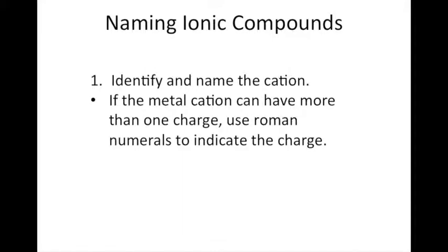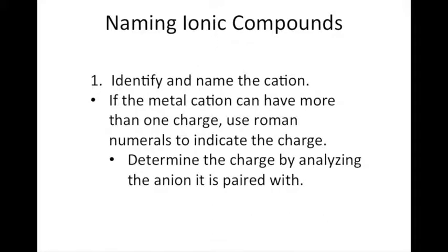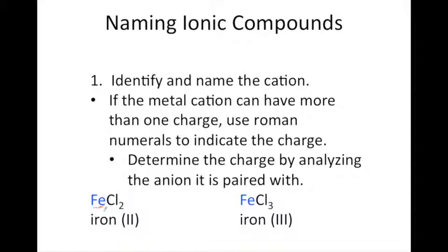If your cation is a metal that can have more than one charge, we must use a Roman numeral when writing the name to indicate the charge. We determine the charge on the cation by looking at the anion, its charge, and how many anions you have. For example, in FeCl2 and FeCl3, the cation Fe is iron in both. In FeCl2, iron is paired with two chlorine ions. Chlorine has a minus 1 charge, so two of those give a total of minus 2. Since charges must add up to zero, the iron must have a +2 charge — so we call it iron(II).